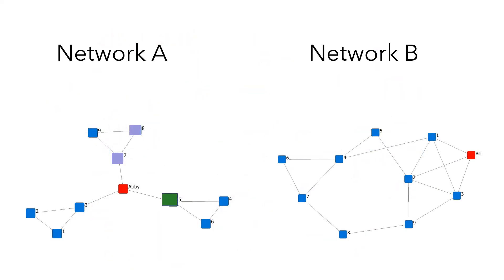Network closure refers to dense clusters of strong ties. Within a cluster, people tend to share similar information, ideas, and behavior. In network A, there are three clusters. Node 7 and 8 are in the same cluster. The ideas and views held by node 7 and 8 are more similar than those held by node 7 and 5, because node 7 and 5 are located in different clusters in network A.